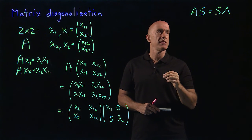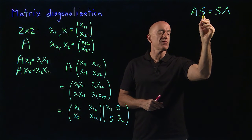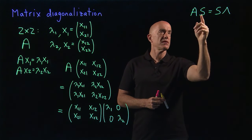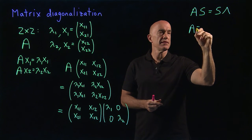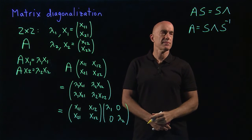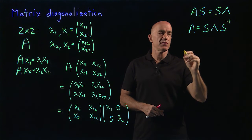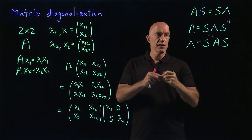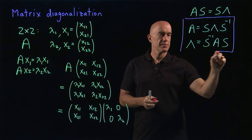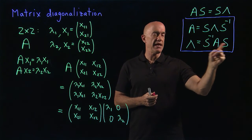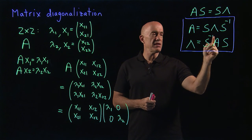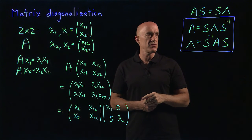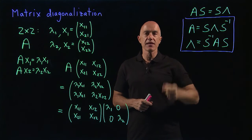If the eigenvectors are linearly independent, then S is invertible. We can multiply on the right by S inverse and get A equals S lambda S inverse. Or we can multiply on the left by S inverse and get the diagonal matrix lambda equals S inverse A S. Two very important relationships.